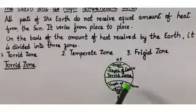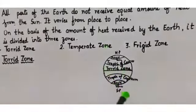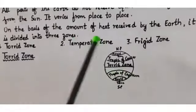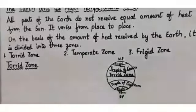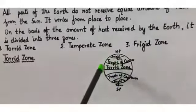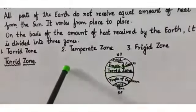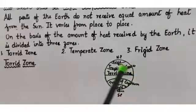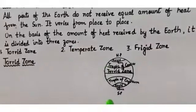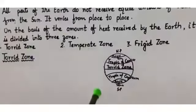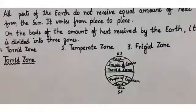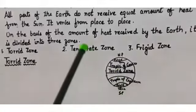The torrid zone receives abundant rainfall and has dense forests. Because of the hot and humid climatic conditions, it also has rivers and rich biodiversity. Many parts of this zone remain hot throughout the year. This hot and humid climate supports the growth and survival of a rich variety of flora — plants — and fauna — animals — present in this region.